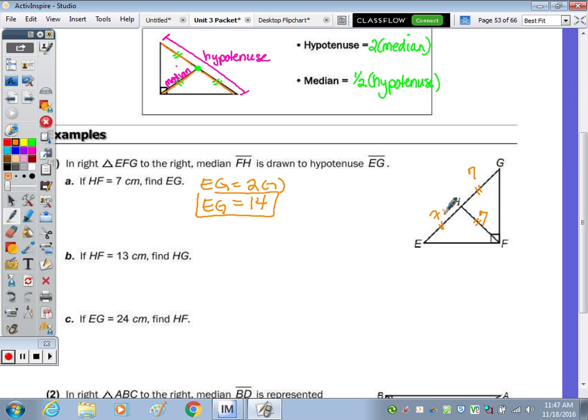This question actually has parts A, B, and C, all in reference to the same picture. So I'm going to erase and start new with B. This time it says that HF is thirteen. So HF is thirteen. We know that it's congruent to that and congruent to that. So not only is HF thirteen, but HG is thirteen and HE is thirteen. So HG is thirteen.